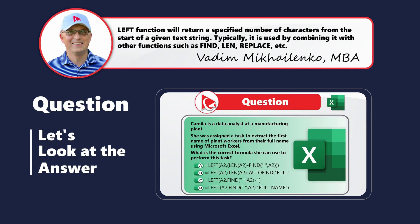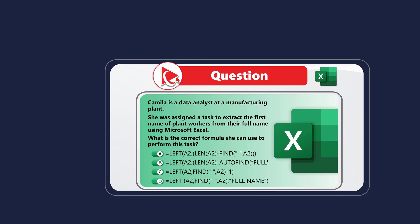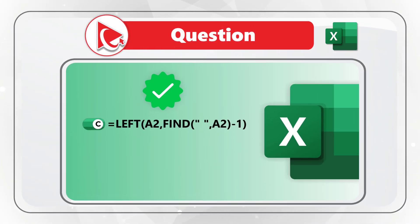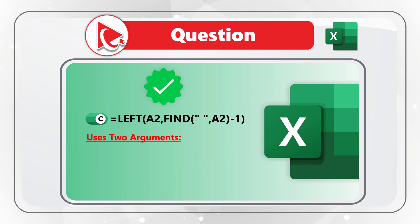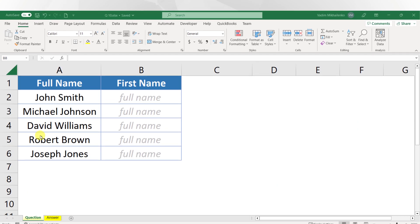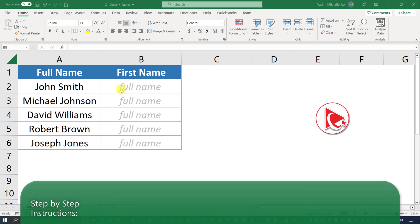The correct choice is choice C. It uses the LEFT function and provides two arguments. The first argument is the value of cell A2. The second argument is the FIND function, which supplies a space as well as the argument A2 minus 1. Let's jump to Microsoft Excel to simulate this scenario.